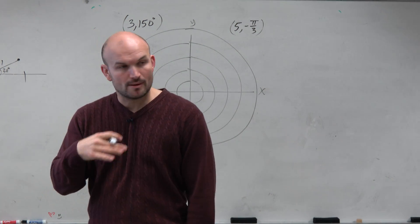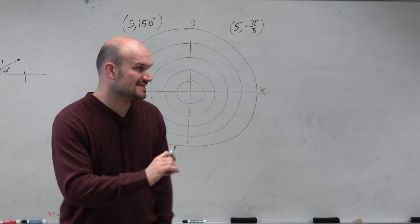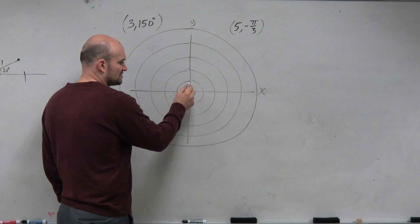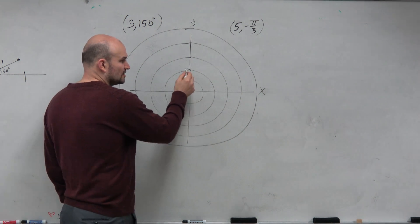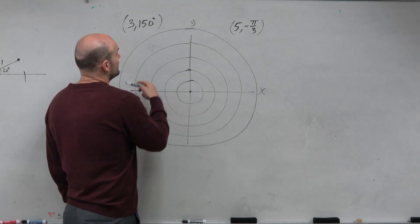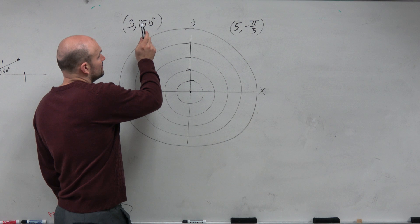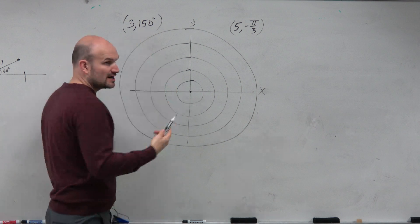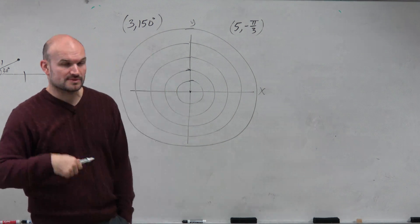In polar form, r represents that directed distance away from the origin — you can also think about it like these little radii. And then we have the angle, which is representing our angle in standard form.